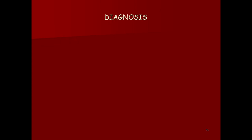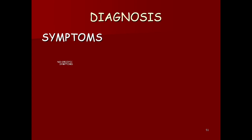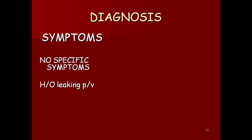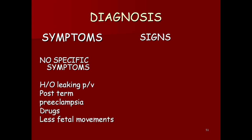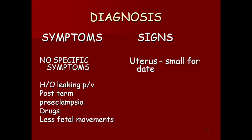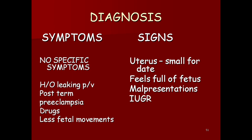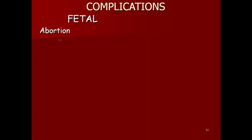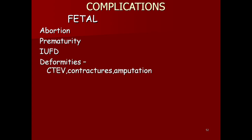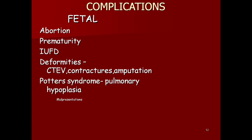Diagnosis: no specific symptoms. History of leaking per vagina, post-term pregnancy, preeclampsia, and use of certain drugs. Signs include uterus small for dates, feels full of fetus, malpresentations, and IUGR. Fetal complications include abortion, prematurity, intrauterine fetal death, deformity and contractures, amputations, Potter syndrome, pulmonary hypoplasia, malpresentations, fetal distress, meconium-stained amniotic fluid, and low Apgar score.